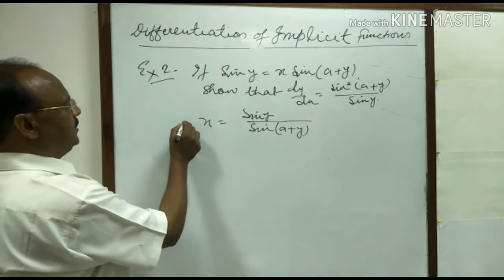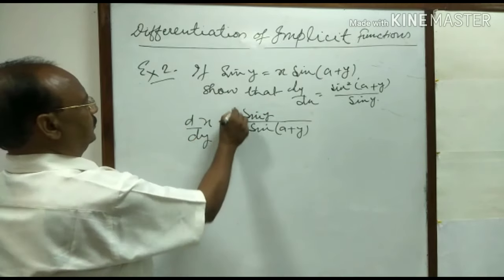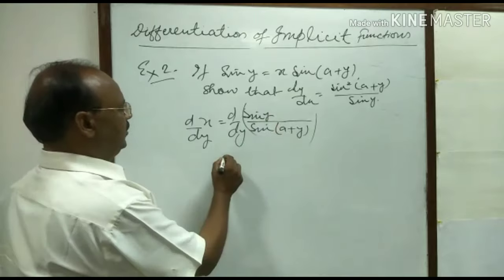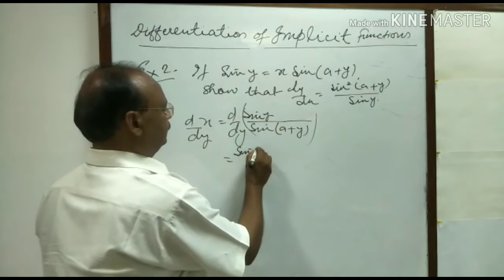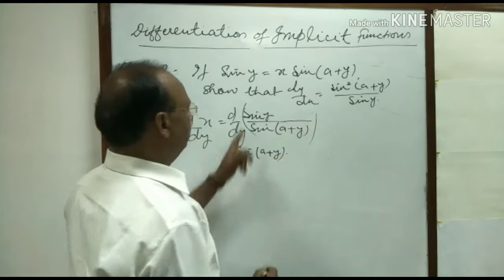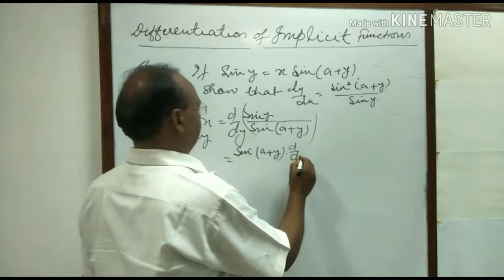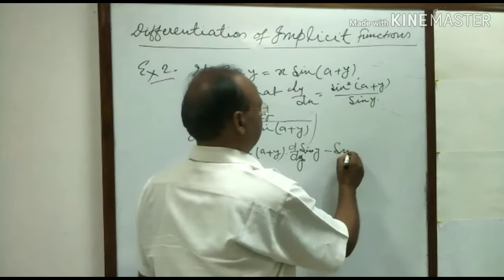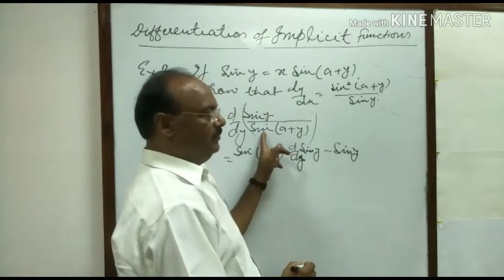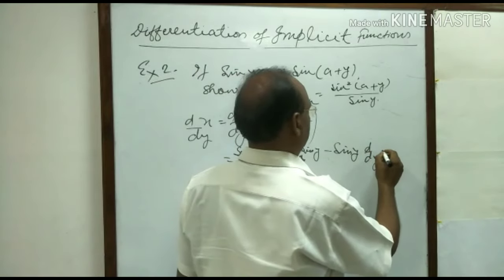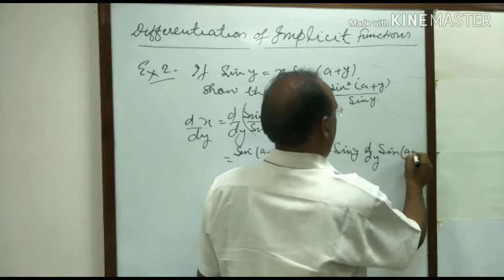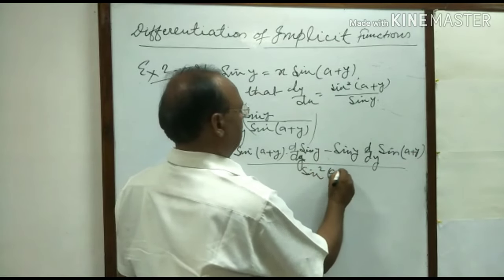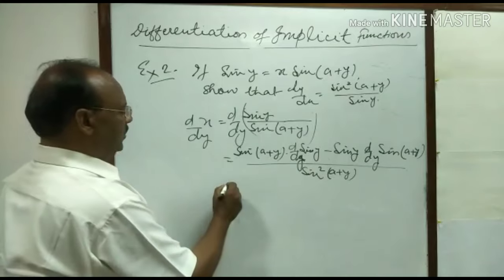Now differentiating both sides with respect to y. We can apply quotient rule here. So by quotient rule we can write: denominator into derivative of numerator, minus numerator into derivative of denominator, all upon denominator whole square. So the denominator squared is sin squared(a plus y). Now let us simplify this expression.